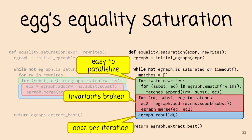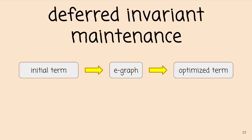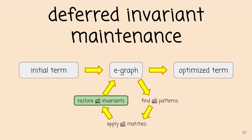Another side effect of this change is that the read phase is easy to parallelize — it's all grouped together, so parallelizing by rewrite is rather trivial. This is what we call deferred invariant maintenance. The way things look now: we find all patterns, then apply all matches — allowing invariants to be broken — and then restore all invariants at once. What's actually happening in this invariant restoration looks a lot like the congruence closure algorithm presented by Downey, Sethi, and Tarjan in 1980. The innovation is not how we perform congruence closure, but when — deferring it until we're done with all mutating operations in that equality saturation iteration.